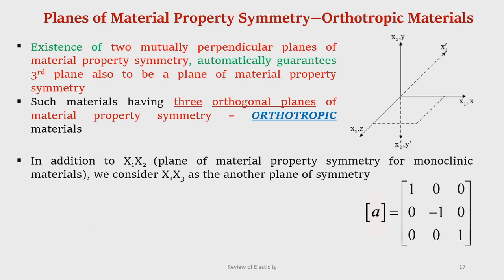Now suppose in addition to one plane of material property symmetry there is another plane of material property symmetry perpendicular to the first. That means there are two mutually perpendicular planes of material property symmetry. In such a case, it can be shown that the third plane is also automatically a plane of material property symmetry — giving three mutually perpendicular planes. Such materials are called orthotropic materials. Existence of one plane of material property symmetry reduced independent elastic constants from 21 to 13.